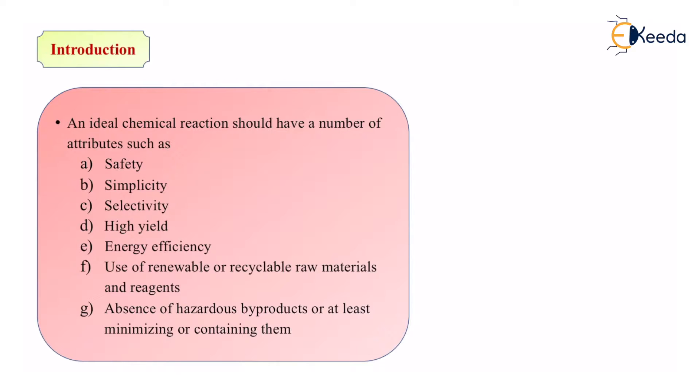Whenever we do a chemical reaction, we need to make sure that certain criteria are fulfilled. Firstly, the reaction should be safe to do. The safety of the reaction is very important. It should not hurt the person who is actually performing the reaction. Second is simplicity. The reaction should be simple enough to do. There should not be a lot of complexities or complications in it.